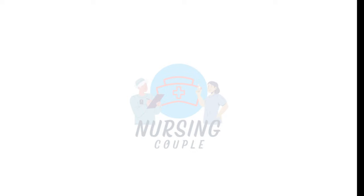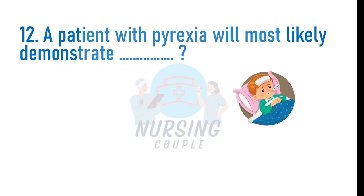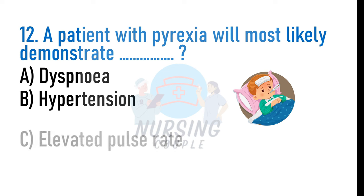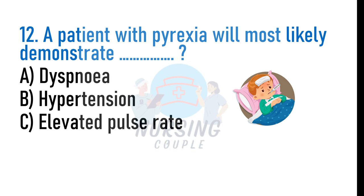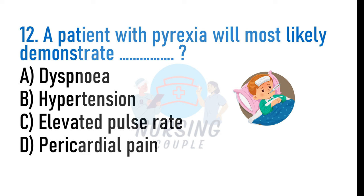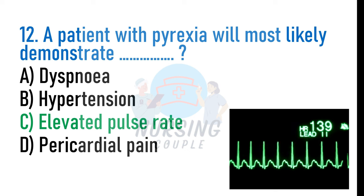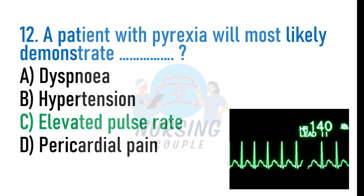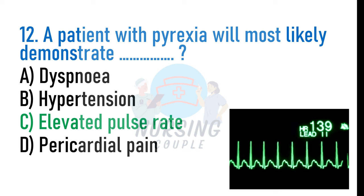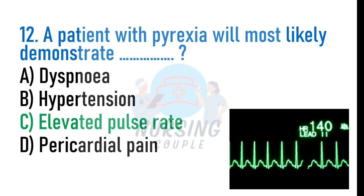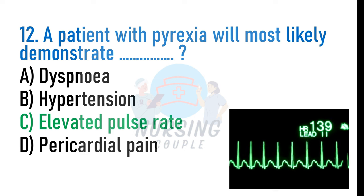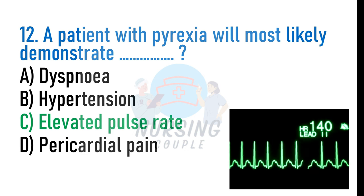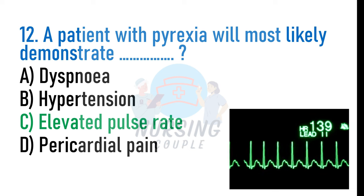A patient with pyrexia will most likely demonstrate: A. Dyspnea, B. Hypertension, C. Elevated pulse rate, D. Pericardial pain. The answer is Option C: Elevated pulse rate. Fever or pyrexia leads to increased metabolic demand of the body. As a compensatory mechanism, heart rate is raised to ensure adequate oxygen delivery to potentially poorly perfused organs.